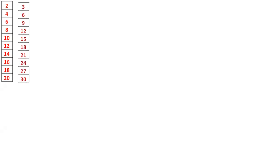3 times 1 is 3, 3 times 2 is 6, 3 times 3 is 9, 3 times 4 is 12, 3 times 5 is 15, 3 times 6 is 18, 3 times 7 is 21, 3 times 8 is 24, 3 times 9 is 27, 3 times 10 is 30.